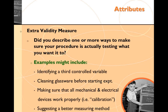The next attribute is extra validity measure. So did you describe one or more ways to make sure that your procedure is actually testing what you want it to do? So essentially, are you looking for possible sources of error that you can remove so that your results are actually more believable?